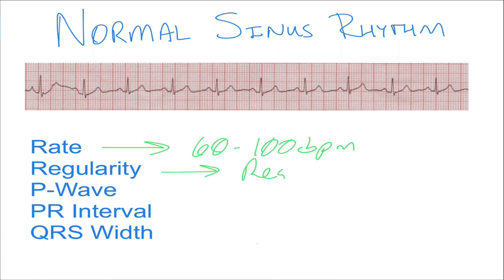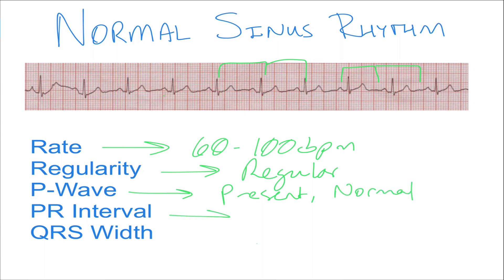The rhythm itself will be regular, meaning that each ratio marches out, whether that's P wave to P wave or QRS to QRS. The P waves will be present and they will be all normal. The PR interval will be normal as well, and a normal PR interval is going to be within one large box on your EKG paper.